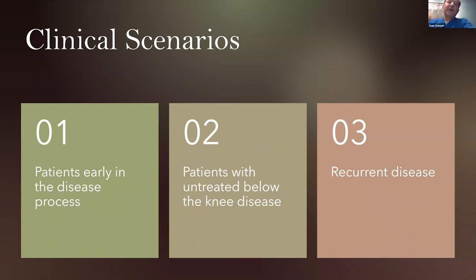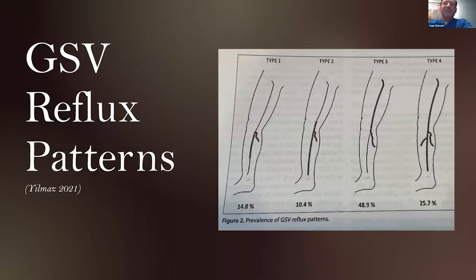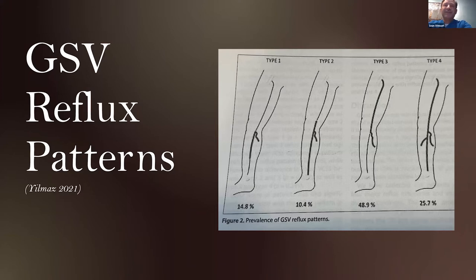You may encounter below-the-knee venous disease in various clinical scenarios: one, in patients early in their disease process; two, in patients that had previous above-the-knee treatment but their below-the-knee disease was left untreated; and three, in patients with recurrent disease. Patients early in their disease process may present initially with below-the-knee segmental GSV. In a retrospective study from the University of Istanbul published this year, almost 900 lower limbs were studied looking at GSV reflux patterns, classified into four types. Types one and two represent approximately a quarter of limbs studied and were more closely related with younger, thinner, and early C classifications.